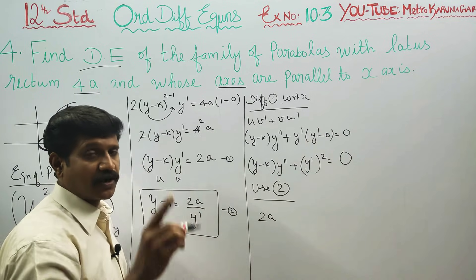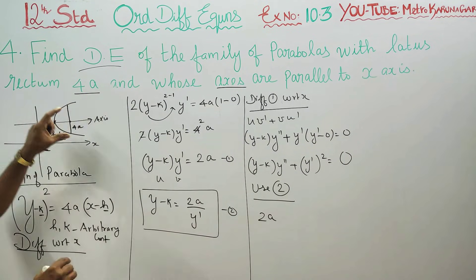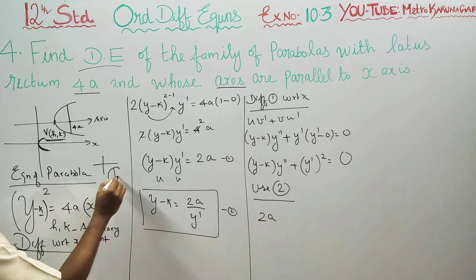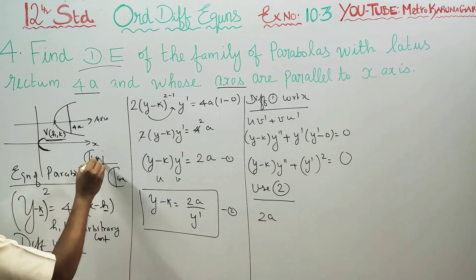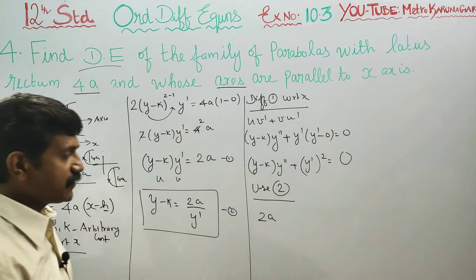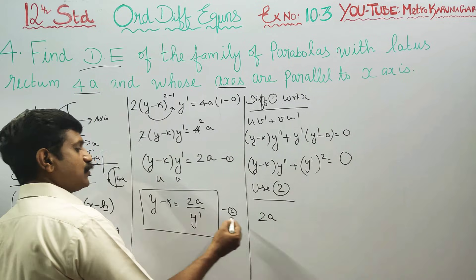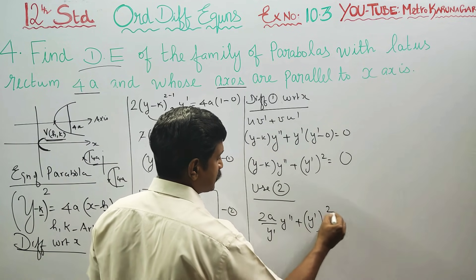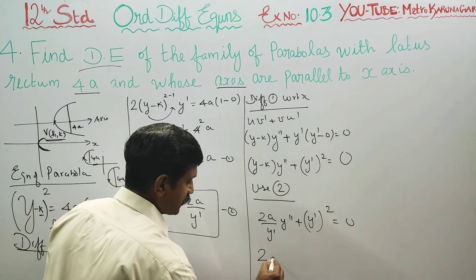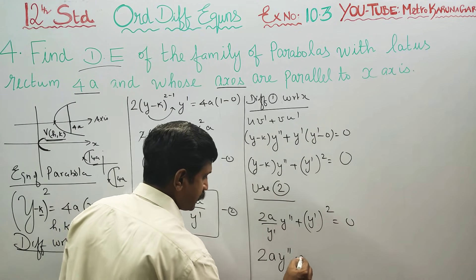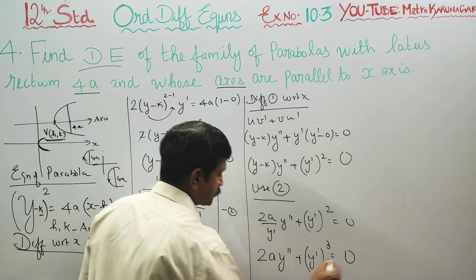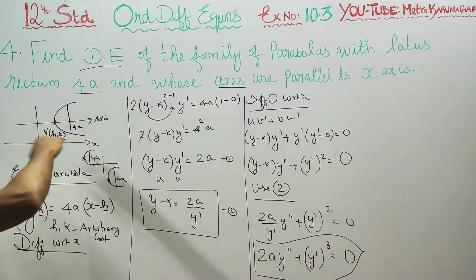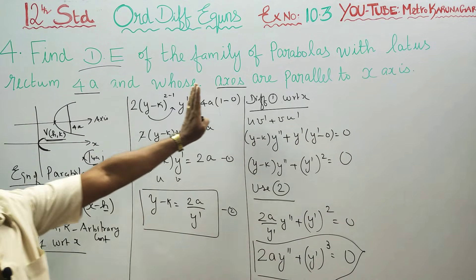A is not an arbitrary constant — A is fixed. A is the latus rectum. The size of the parabola is determined by the latus rectum 4a. The final answer is: 2a times y-double-dash plus y-dash cubed equals 0. This is the differential equation of the family of parabolas open right, with axis parallel to the x-axis.